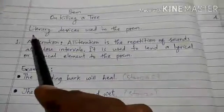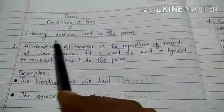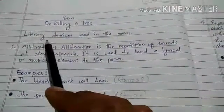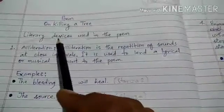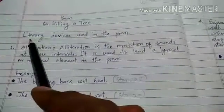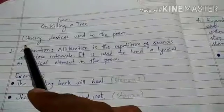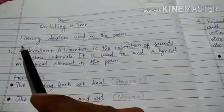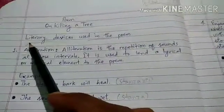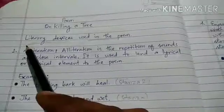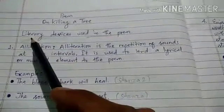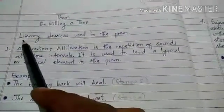Before that, we have to understand what literary devices are. Literary devices are the techniques expressed through the use of words. In any literary work — whether prose or poetry — when writers use some technique to make their work more impressive, to emphasize on some topic, the techniques used through words, phrases and clauses are called literary devices.